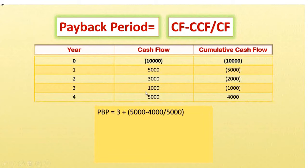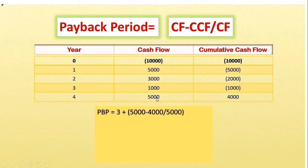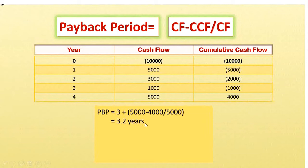Payback period equals three plus the formula: CF minus CCF divided by CF — but don't make the mistake of using year three's values here. You must use year four's values. So: three plus (5,000 minus 4,000) divided by 5,000, which is three plus 1,000 divided by 5,000. That gives us three plus 0.2, so the payback period is 3.2 years — meaning in 3.2 years we will get back the amount invested.